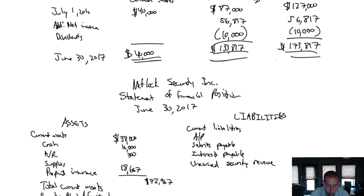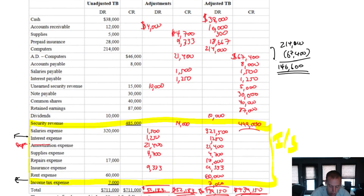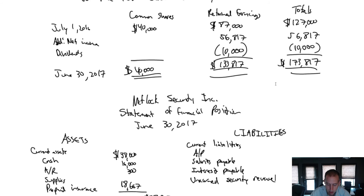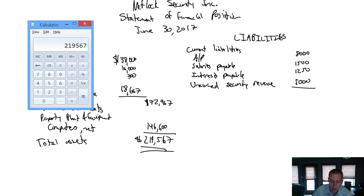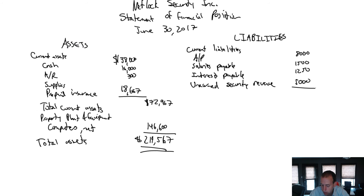Let's total those amounts up: accounts payable 8,000; salaries payable 1,500; interest payable 1,250; and unearned security revenue 5,000. When I add up that list I get 15,750 as my total current liabilities.